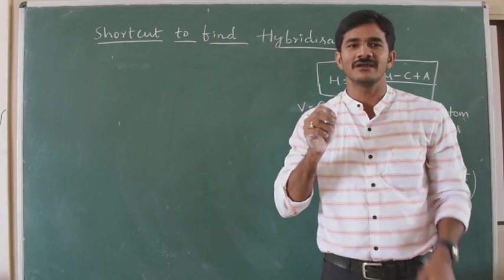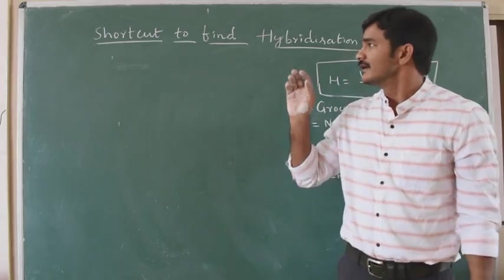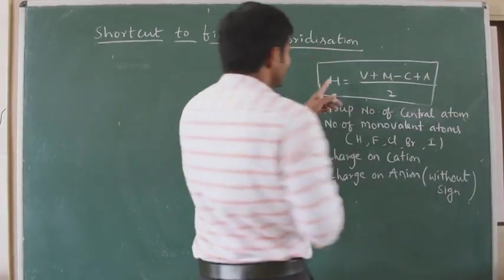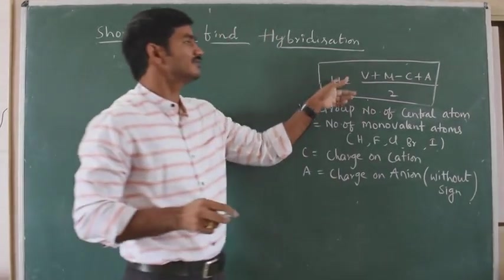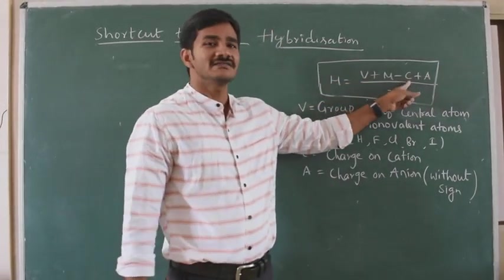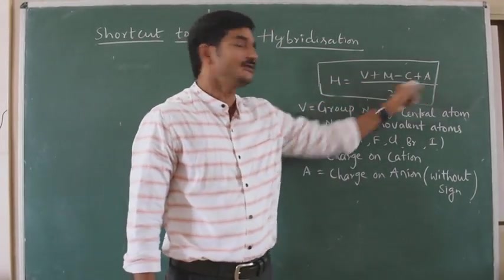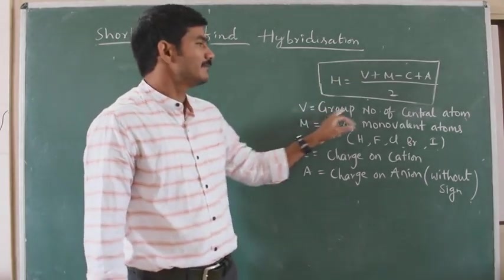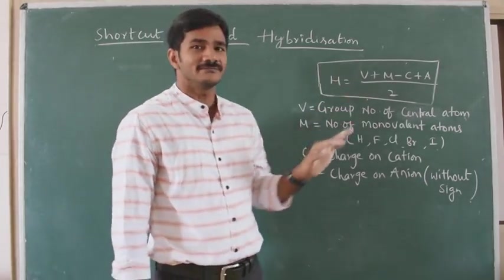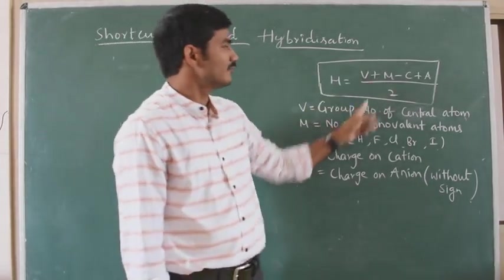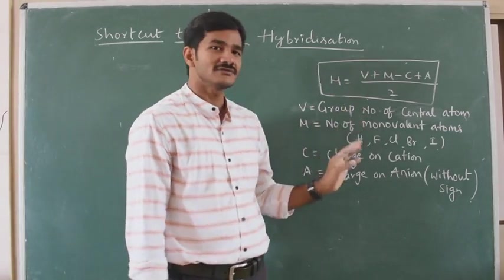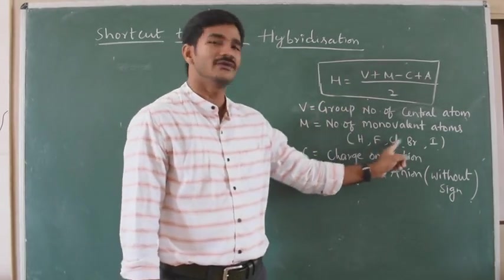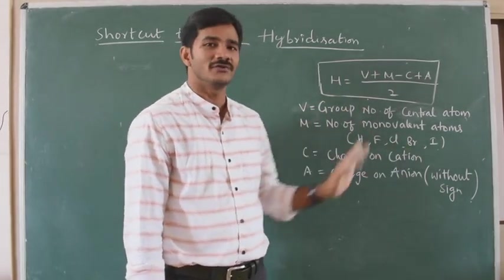Based on the formula, we can find out the hybridization. The formula is: H is equal to (V plus M minus C plus A) divided by 2. Here, V is the group number of the central atom. M is the number of monovalent atoms — those forming one bond — like hydrogen, chlorine, bromine, and similar monovalent atoms.